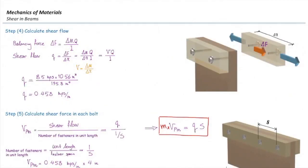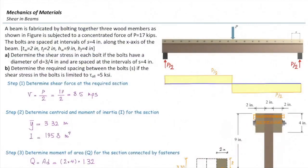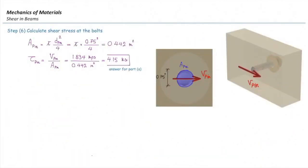In step 5, S is unknown, M is 1, and q is known. For V_pin: going back to step 6, based on the given shear stress of 5 ksi, we can determine V_pin by reversing the calculation. With V_pin known, we can solve for S using V_pin = q × S. So the solution works backwards from the stress limit to find the required bolt spacing.